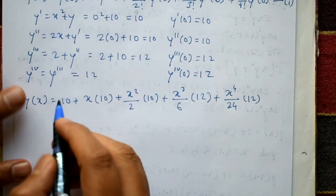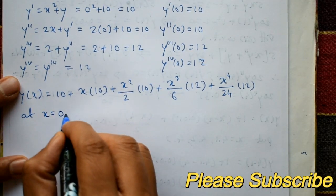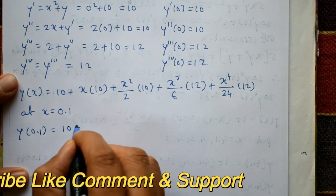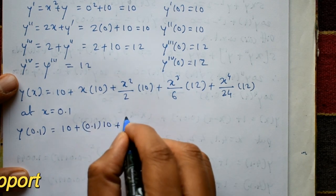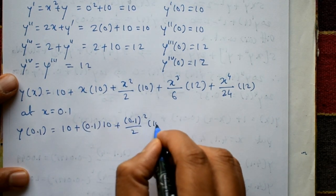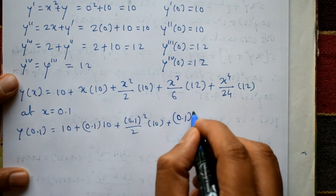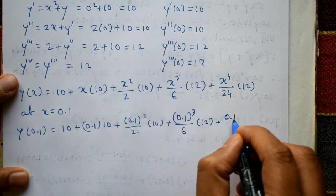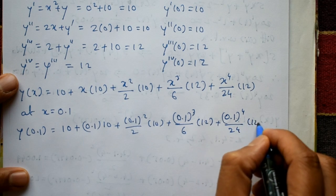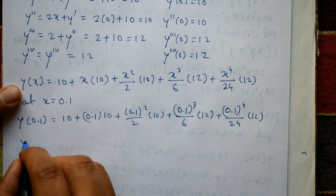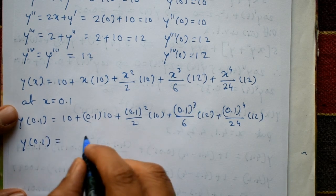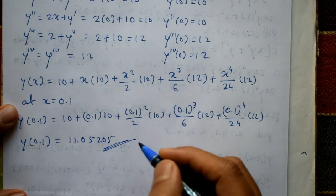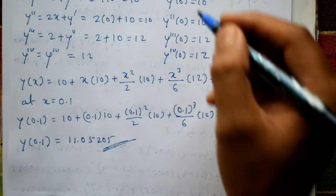To find y(0.1), substitute x = 0.1: y(0.1) = 10 + (0.1)(10) + (0.1)²/2·(10) + (0.1)³/6·(12) + (0.1)⁴/24·(12). Using a calculator, y(0.1) = 11.05205. This is the required solution. Please subscribe to my channel, like, and give comments. Thank you.